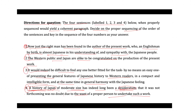Now looking at sentence four alongside sentence one: sentence four mentions the want of a proper person to undertake such a work, and sentence one says 'just the right man has been found in the author of the present work.' So sentence one adds to sentence four by indicating that the right man has now been found. We can therefore consider four and one as a pair.